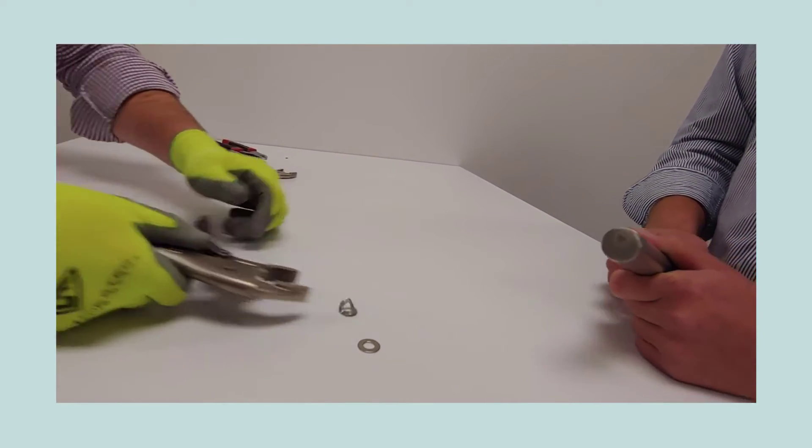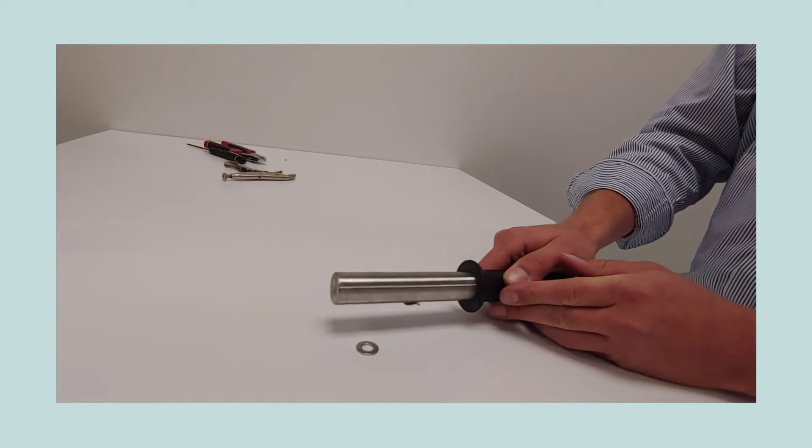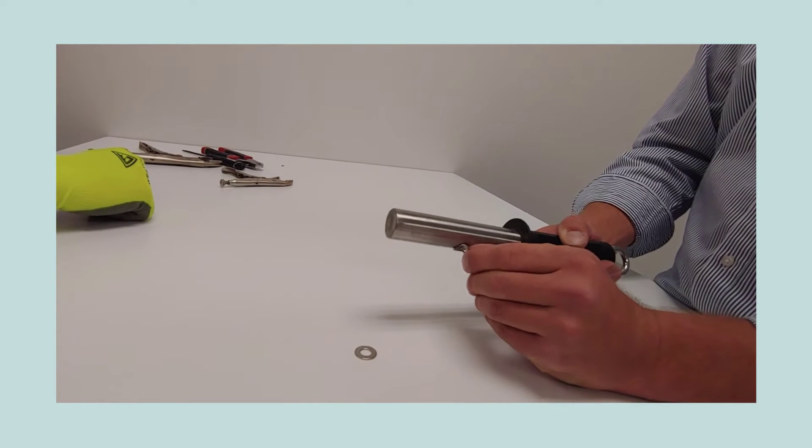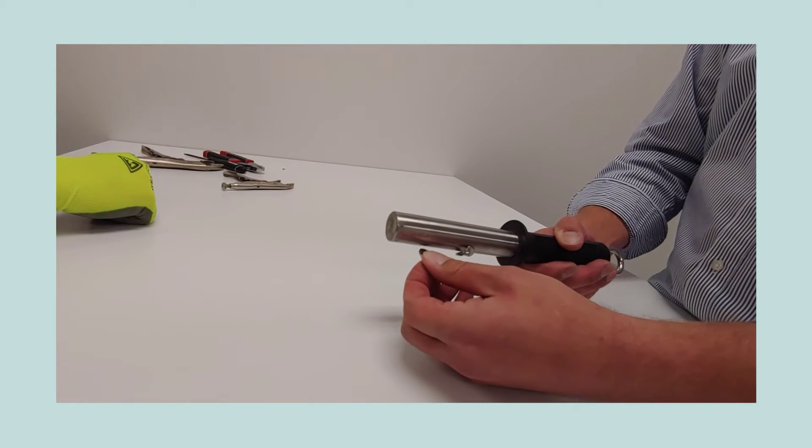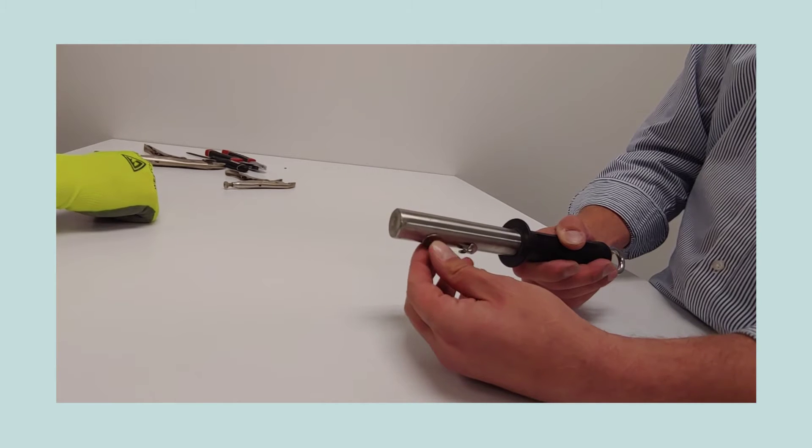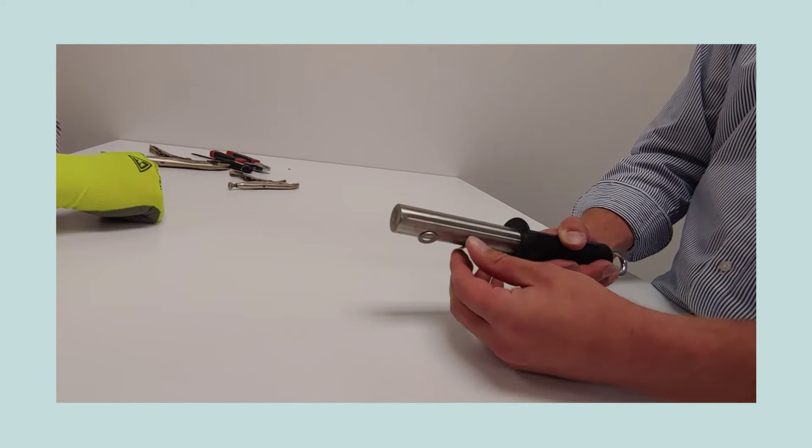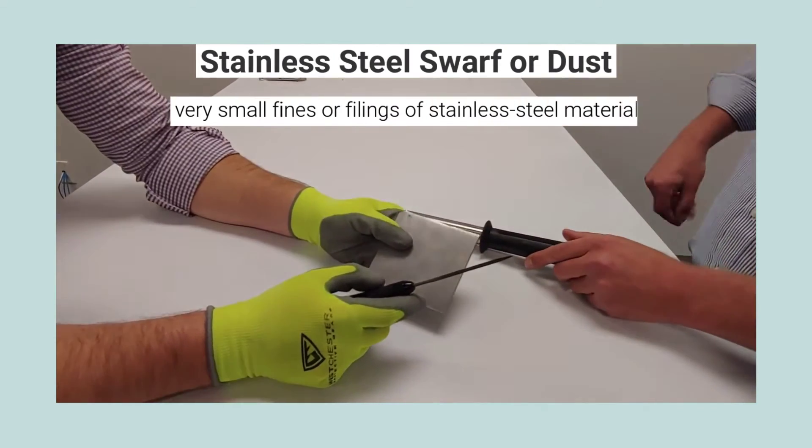It will now be highly magnetic. It's become very magnetic in comparison to the other washer. The other washer is very slightly magnetic; it's only really just holding on.